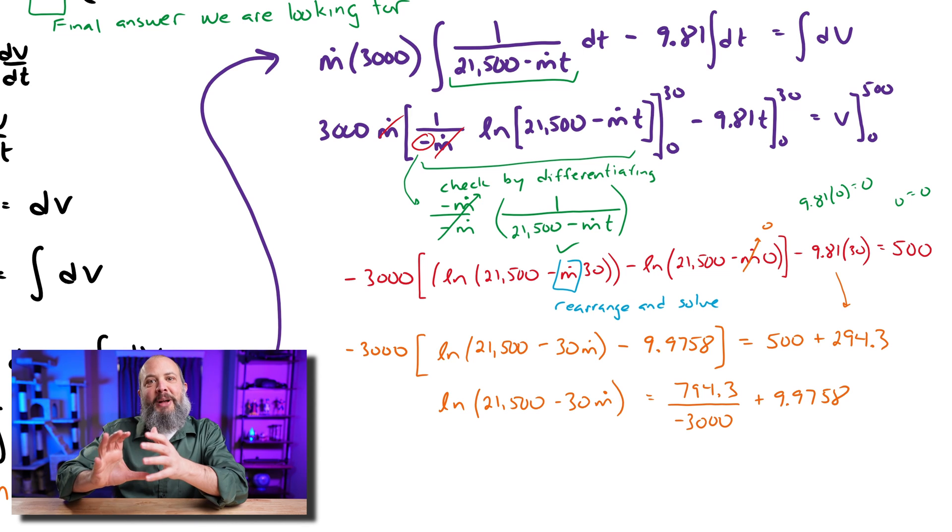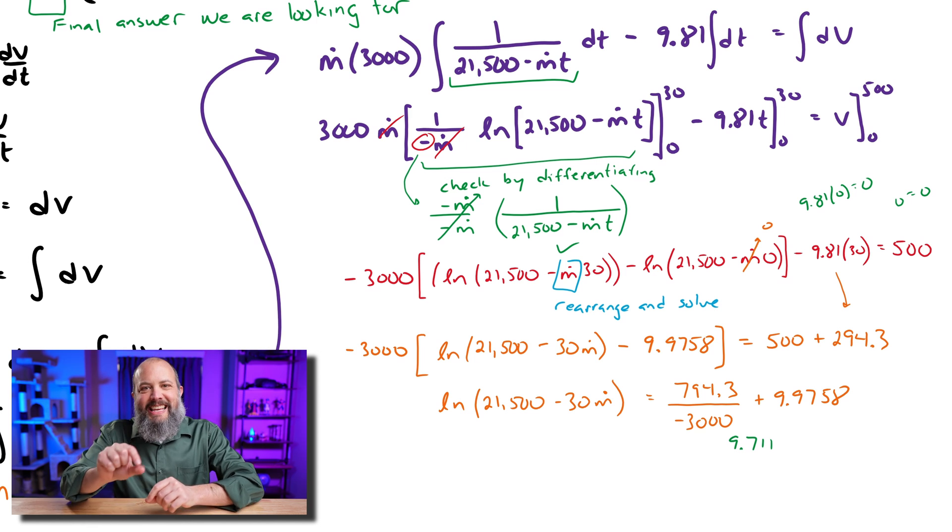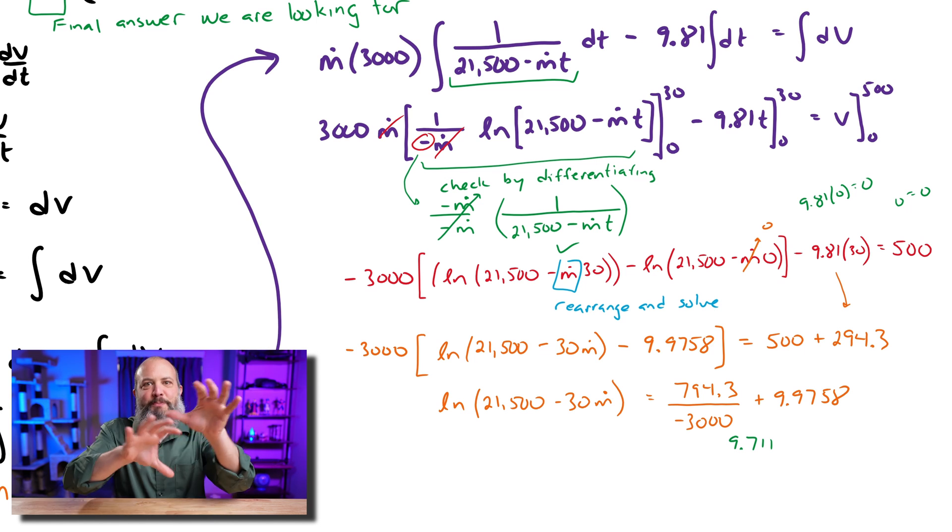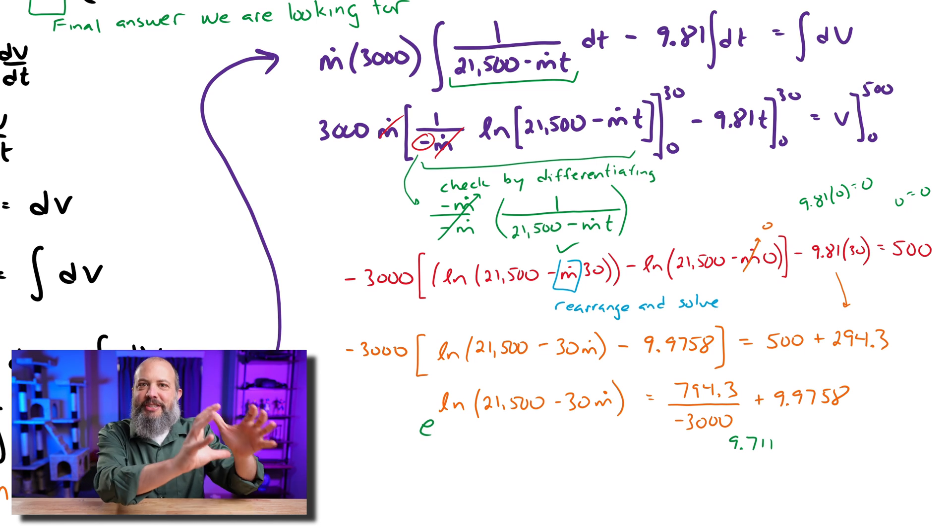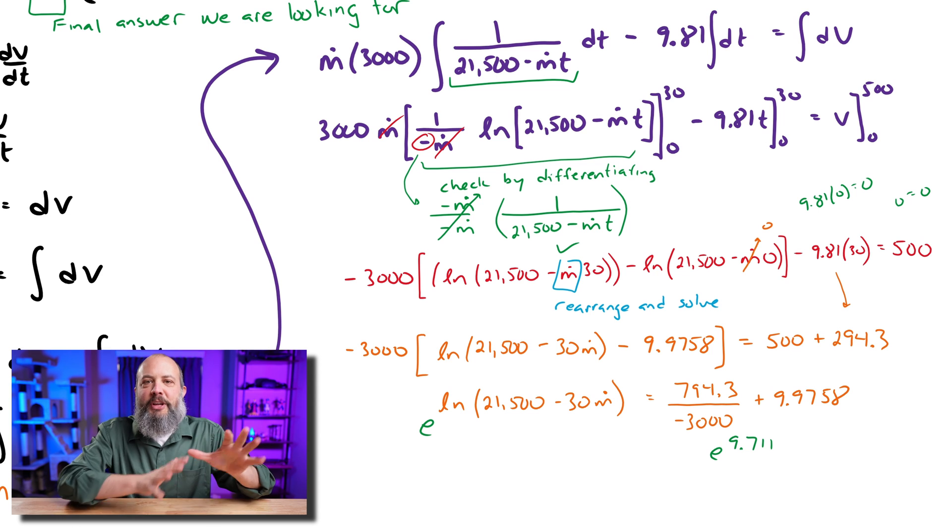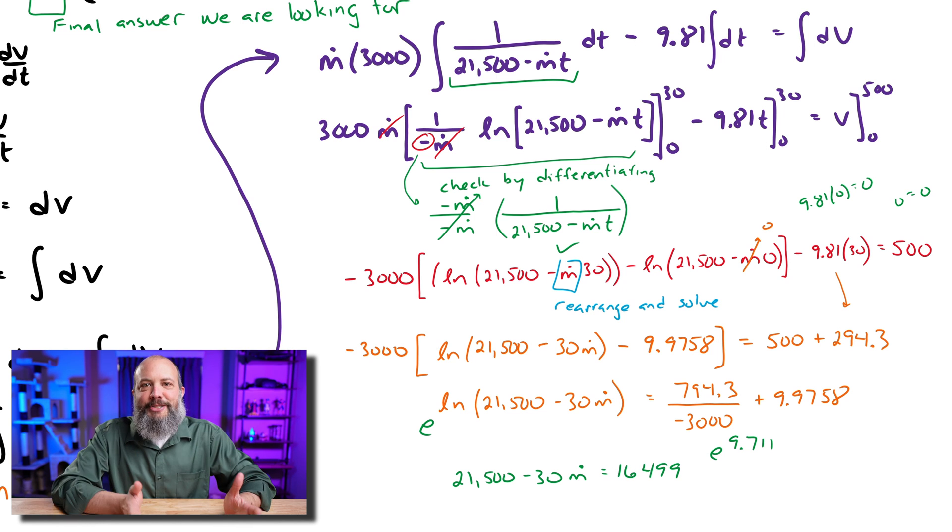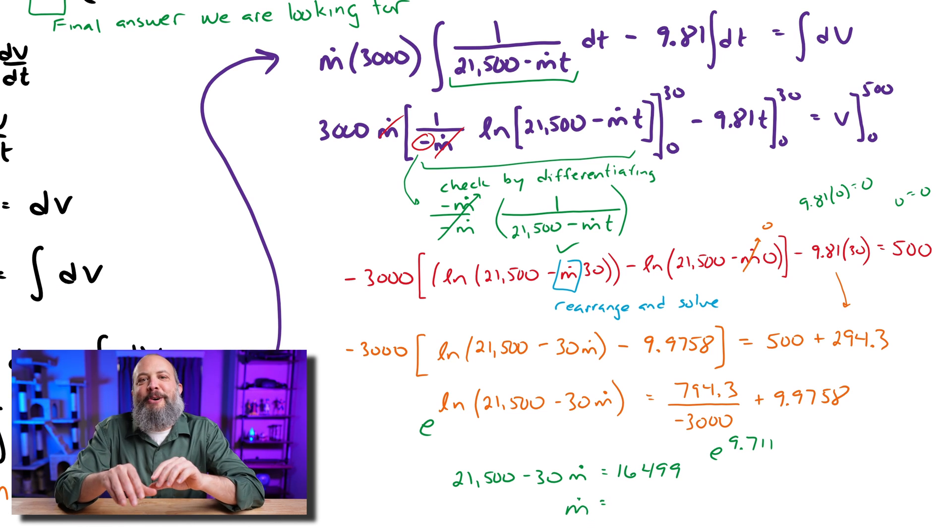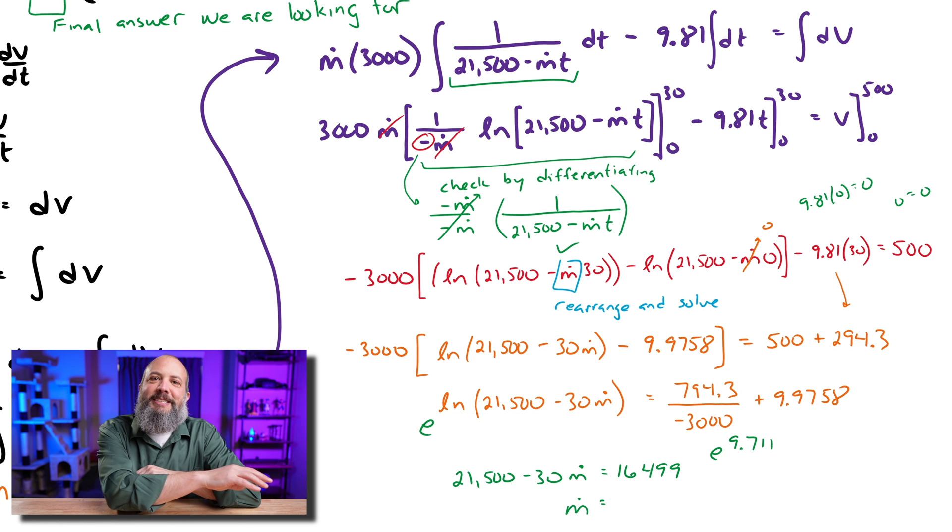You need the natural log by itself to get rid of it using an exponent. So e to the natural log cancels both of those out and leaves just the inside left. And once we combine everything on the right side, we've got e to the 9.7, which again, that's some calculator work about 16,000. So now this is finally looking like a regular equation, 21,500 minus m dot t equals 16,000.